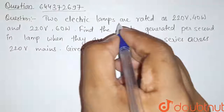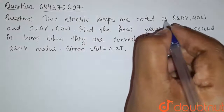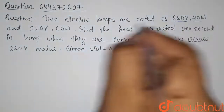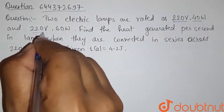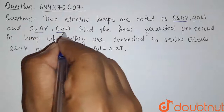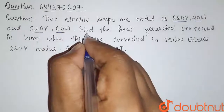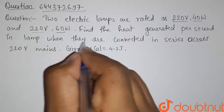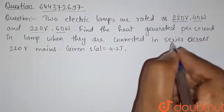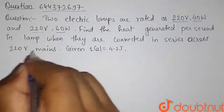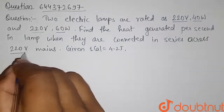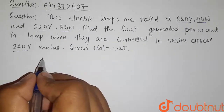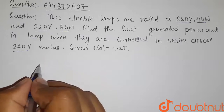Here is our question: two electric lamps are rated as 220 volt 40 watt and 220 volt 60 watt. Find the heat generated per second in each lamp when they are connected in series across 220 volt mains.